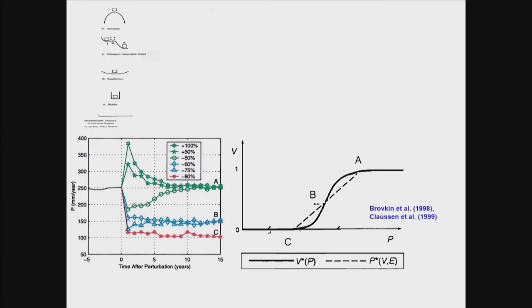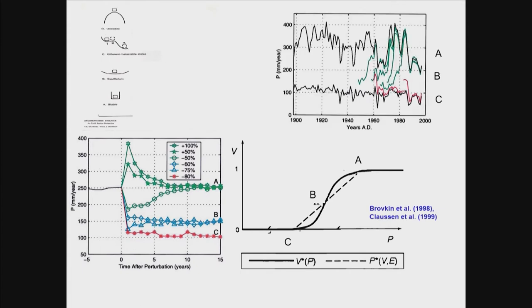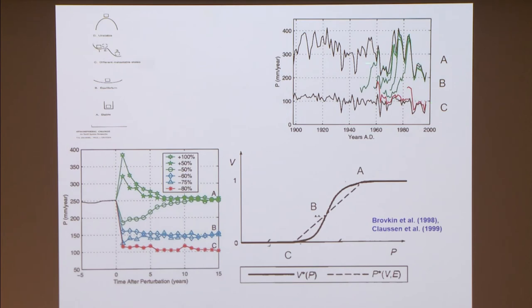This is an example of a region where you have more than one equilibrium in the climate system. Represented in this cartoon: you could have fluctuations around one equilibrium, and if those fluctuations are large enough they could move you into a different equilibrium. That's exactly what was shown in these experiments. If you start the model, you could simulate equilibrium C or equilibrium A, and if you start around equilibrium B, a perturbation would push you either to equilibrium A or to equilibrium C because it's an unstable equilibrium. This provides an example of multiple climate equilibria in the coupled land-atmosphere system.